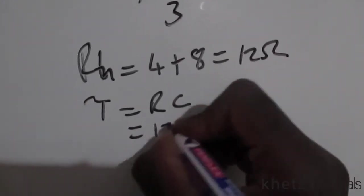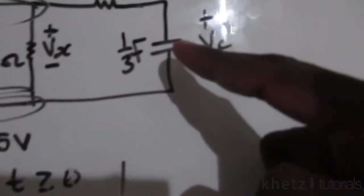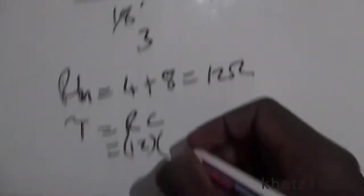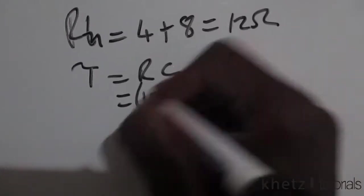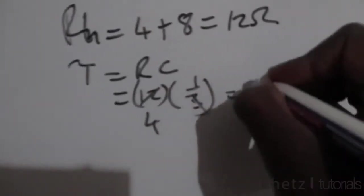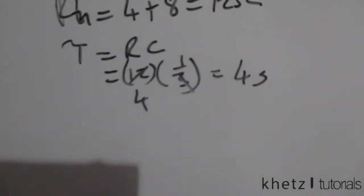Your R is 12 and your C is the value of the capacitor which is 1/3 farads. So 1/3 times 12 is 4, so your time constant is 4 seconds.